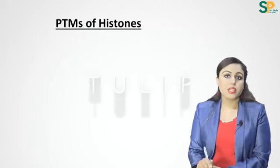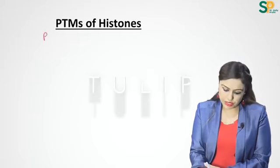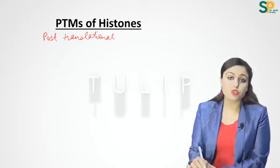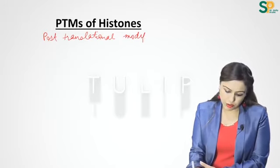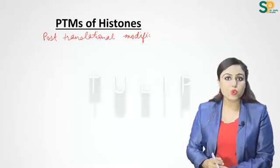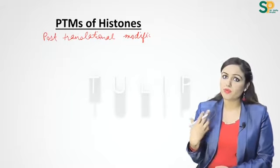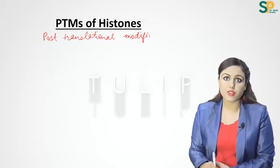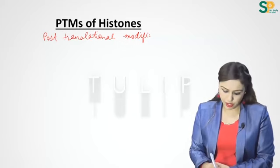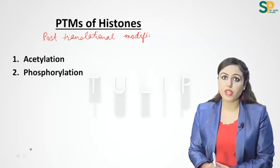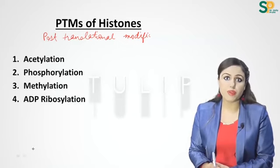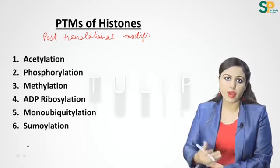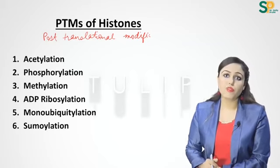PTMs of histones means post-translational modifications of histones, and they lead to regulation of gene expression. There are six ways histones are modified: acetylation, phosphorylation, methylation, ADP ribosylation, mono-ubiquitylation, and sumoylation.